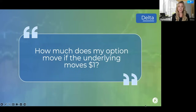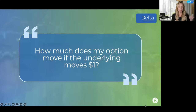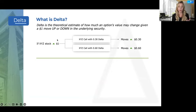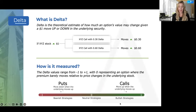Let's talk about delta. This is the textbook definition: how much does my option move if the underlying moves by $1? Delta is a theoretical estimate of how much an option's value may change given a $1 move up or down in the underlying security. On an options chain you might see a delta of 0.3 or 0.6. All that means is if the stock moves up by $1, your premium will move up by 30 cents or 60 cents respectively. Delta is on a range from negative one to positive one, with zero being neutral.